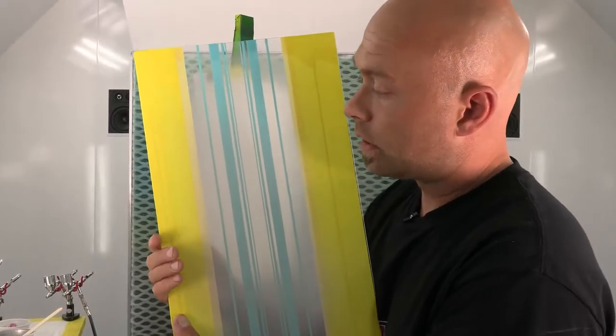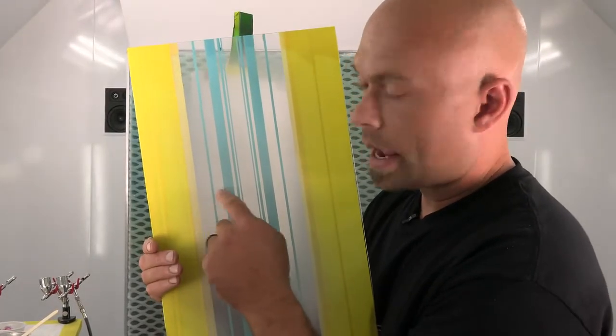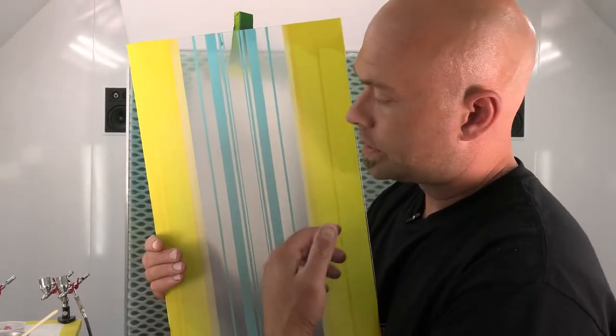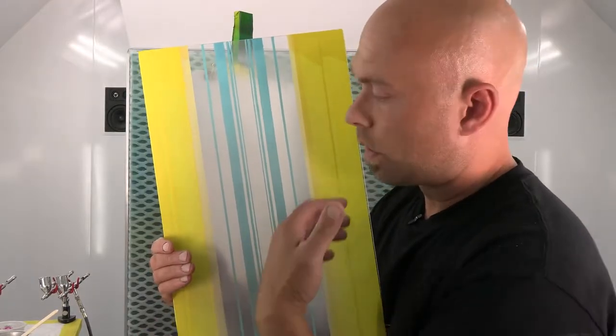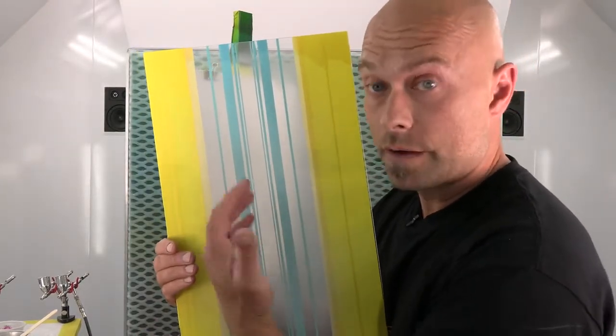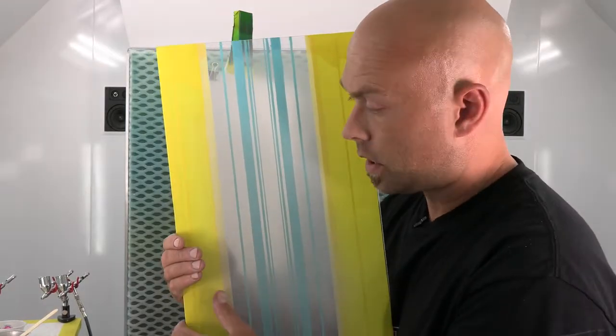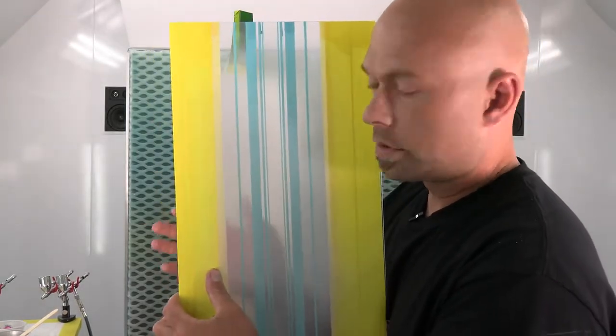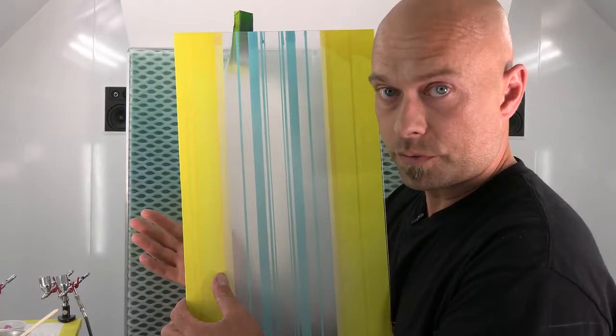It's going to increase your dry time, and it's also going to increase that edge of your graphics. And especially when you're doing something reverse painted or just in general when you're doing graphics, you want this edge to be as minimal as possible. So one coat of that pearl silver mixed with the 40-30.